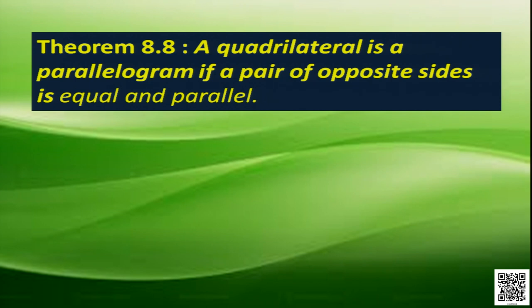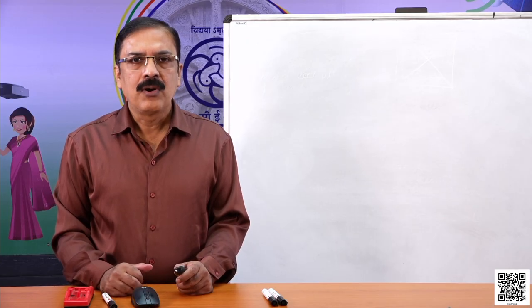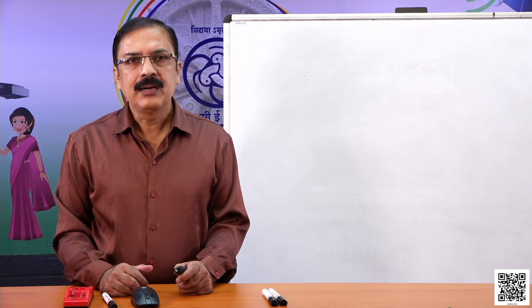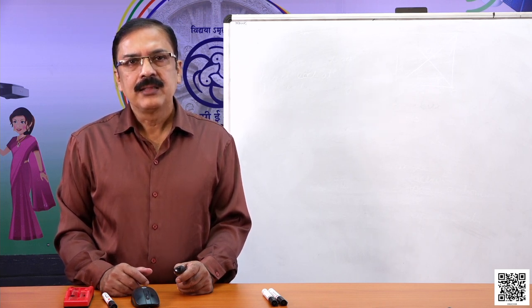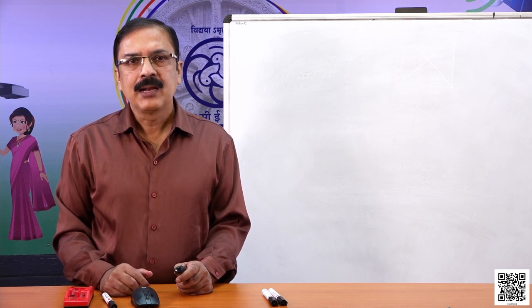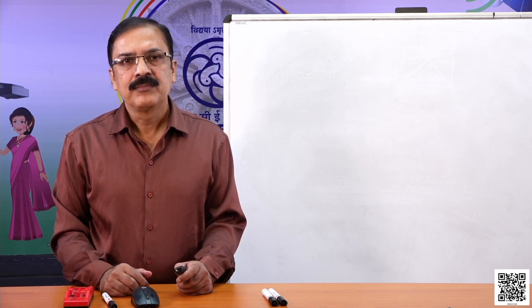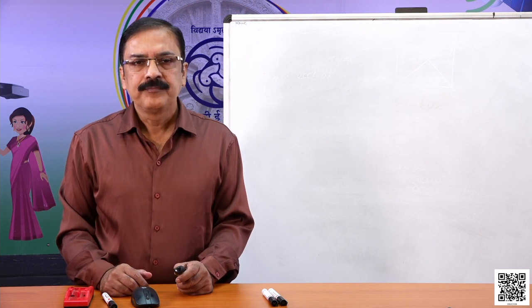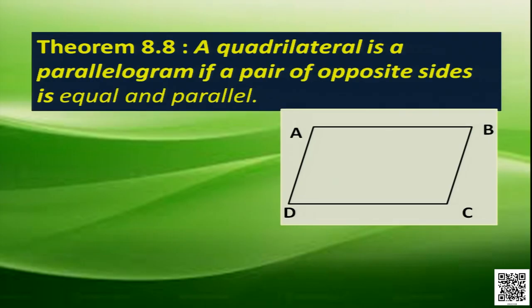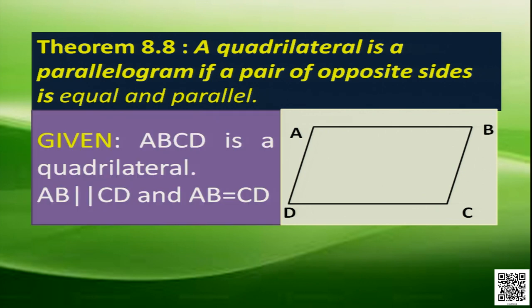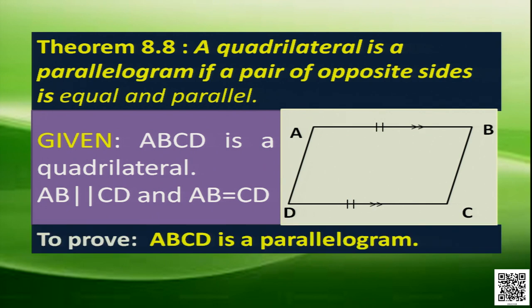Let's understand it. We know that in a parallelogram, opposite sides are parallel and equal. Here, the condition is that if one pair satisfies this condition, then also the quadrilateral is a parallelogram. Consider the figure: ABCD is a quadrilateral in which AB is parallel to CD and AB is equal to CD. We have to prove that ABCD is a parallelogram.